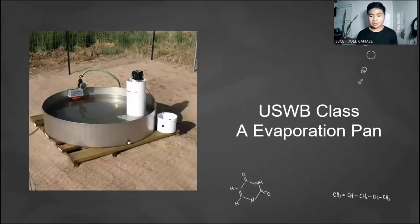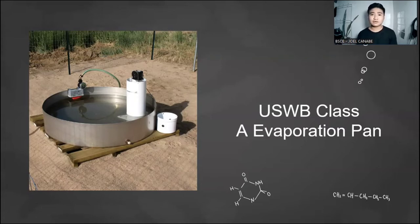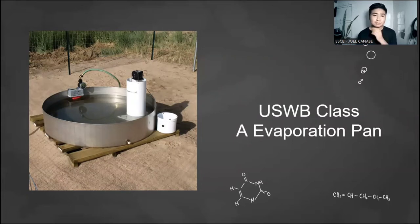Next, we have the USWB Class A evaporation pan. This pan has a diameter of 1,210 millimeters and a depth of 255 millimeters. The depth of water is maintained between 18 and 20 centimeters. It is made of unpainted GI sheet and placed on a wooden platform 15 centimeters above ground level to allow free air circulation below the pan. Evaporation is measured by measuring the depth of water in a stilling well with a hook gauge.